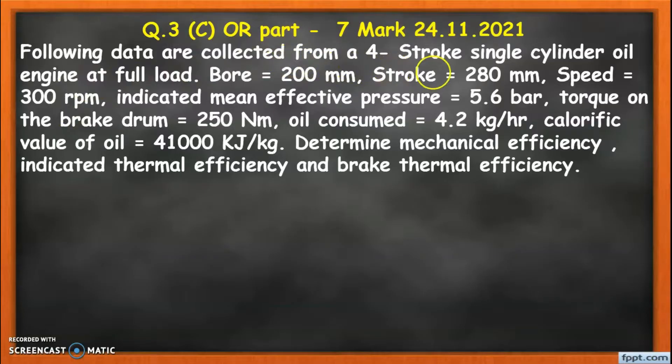Following data are collected from a 4-stroke single cylinder oil engine at full load: Bore = 200 mm, Stroke = 280 mm, Speed = 300 rpm, indicated mean effective pressure = 5.6 bar, Torque on the brake drum = 250 Nm, oil consumed = 4.2 kg/hr, calorific value of oil = 41,000 kJ/kg.